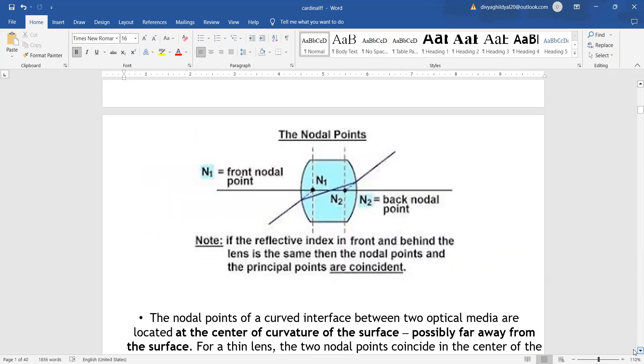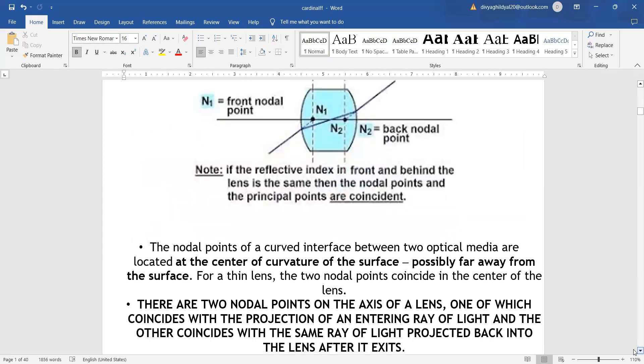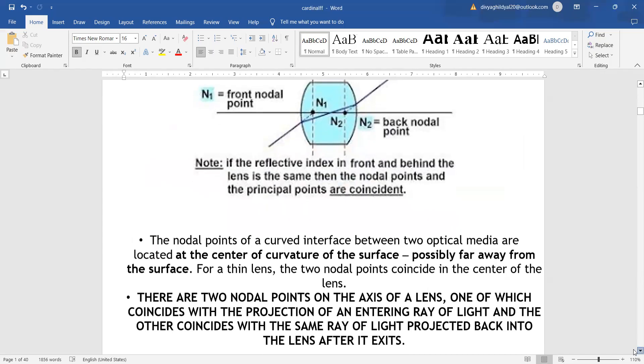Nodal points are basically two points on the axis of a lens, one of which coincides with the projection of an entering ray of light and the other coincides with the same ray of light projected back into the lens when it exits.